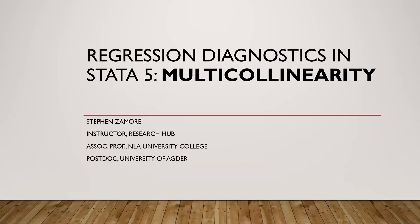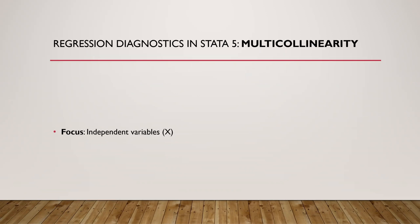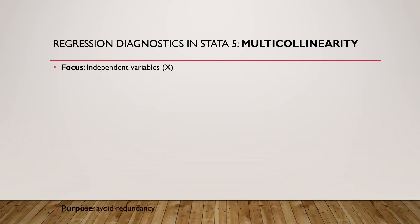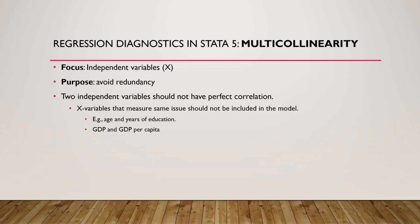Welcome to the fifth assumption about regression diagnostics in Stata, and that is the multicollinearity issue. Here we focus on the independent variables and we want to avoid redundancy. So if you have two variables that control for the same thing, why do we include both of them? We will see soon why we have to remove this redundancy problem, and so we should not have two variables that measure the same thing.